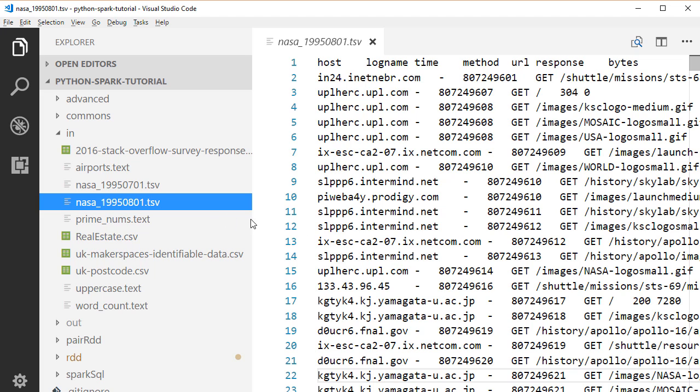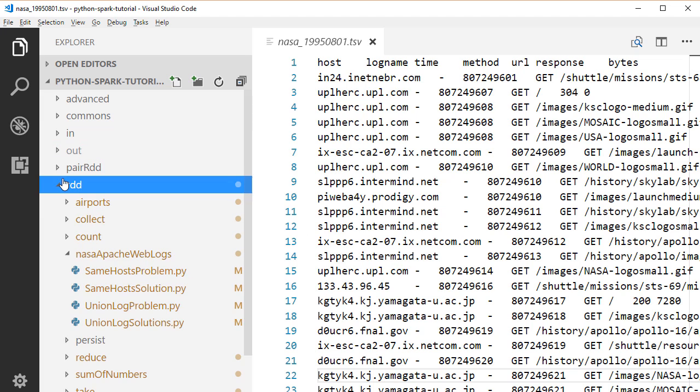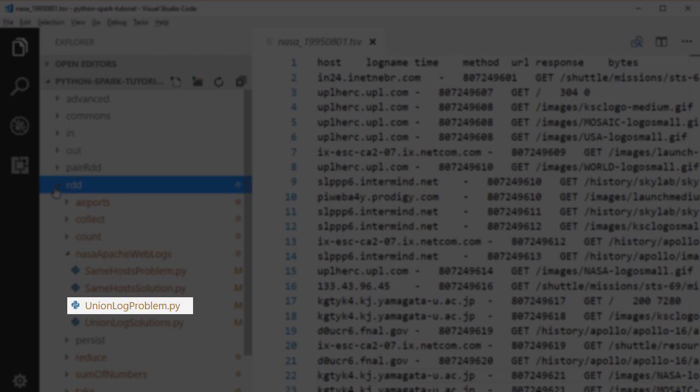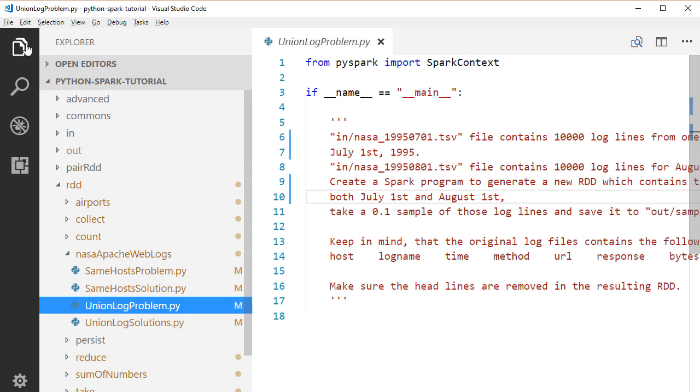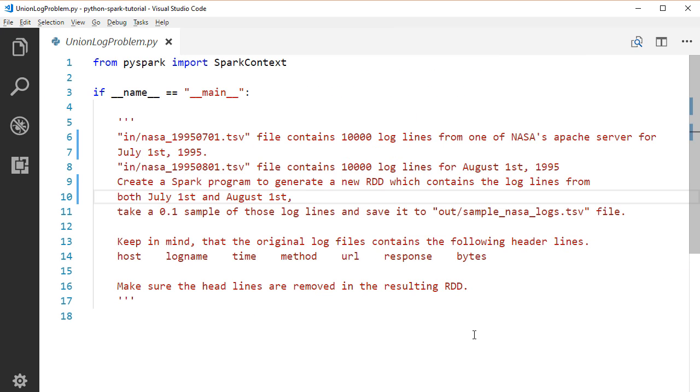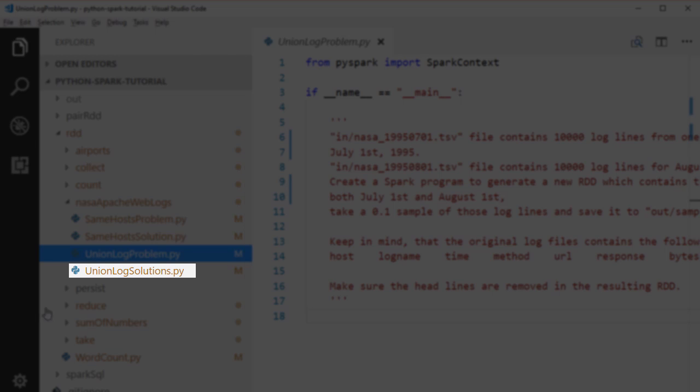Let's open the union log problem file under the rdd.nasa Apache Web Logs package. The task is to create a new RDD which contains the log lines from both July 1 and August 1, and take a 0.1 sample of those log lines and save it to sample NASA Logs file in the out directory. Make sure the header lines are removed from the resulting RDD. Let's see how we resolve this problem. Open the union log solution file under the same package.